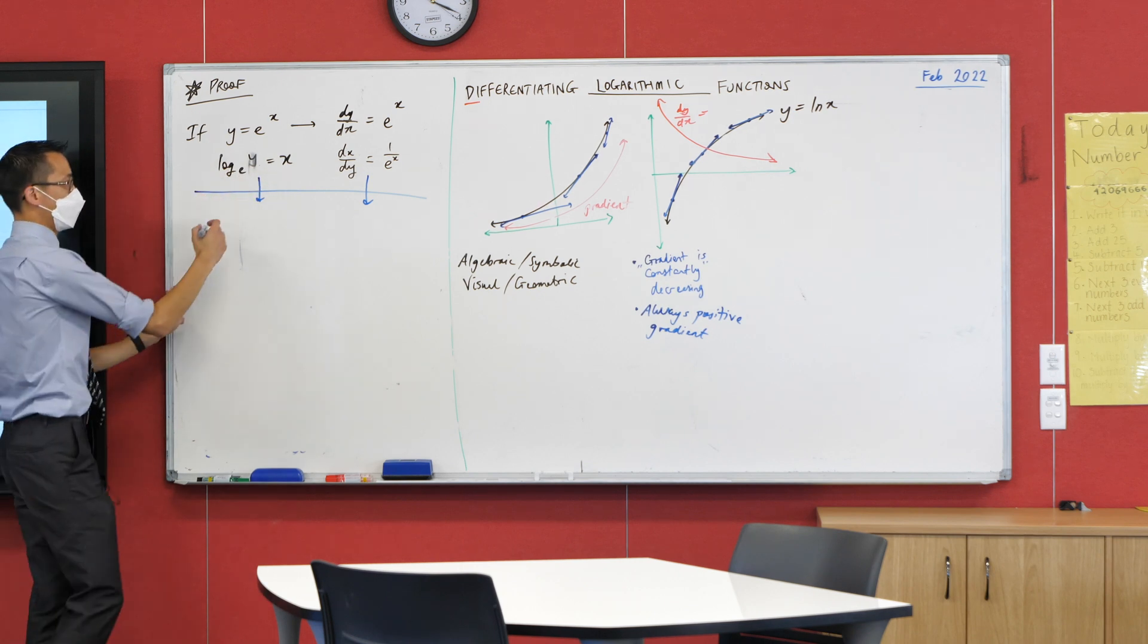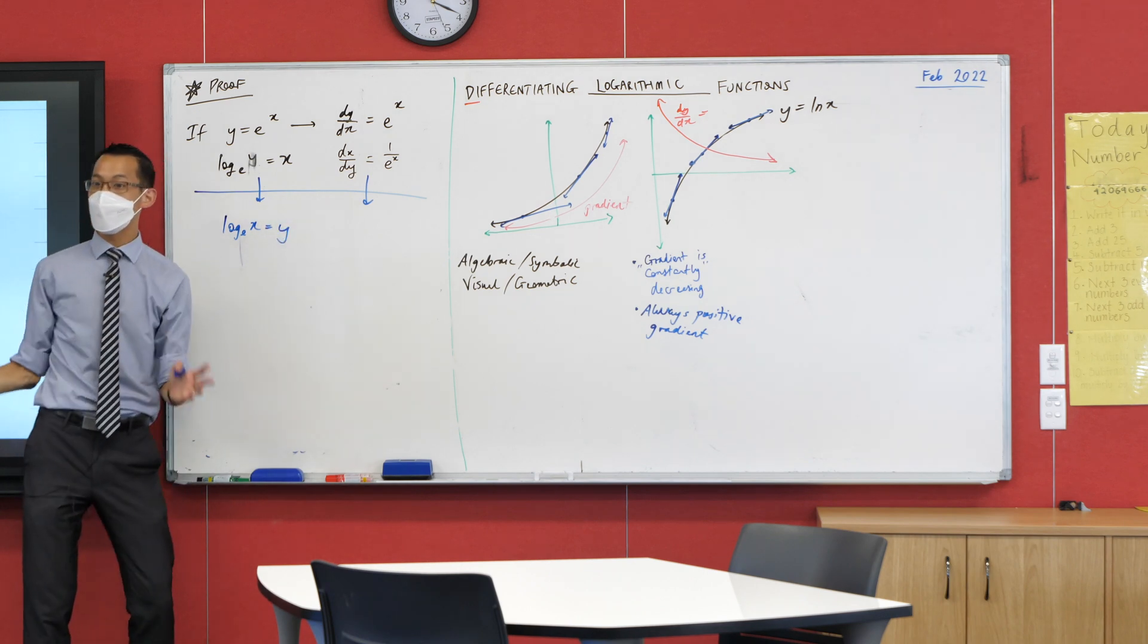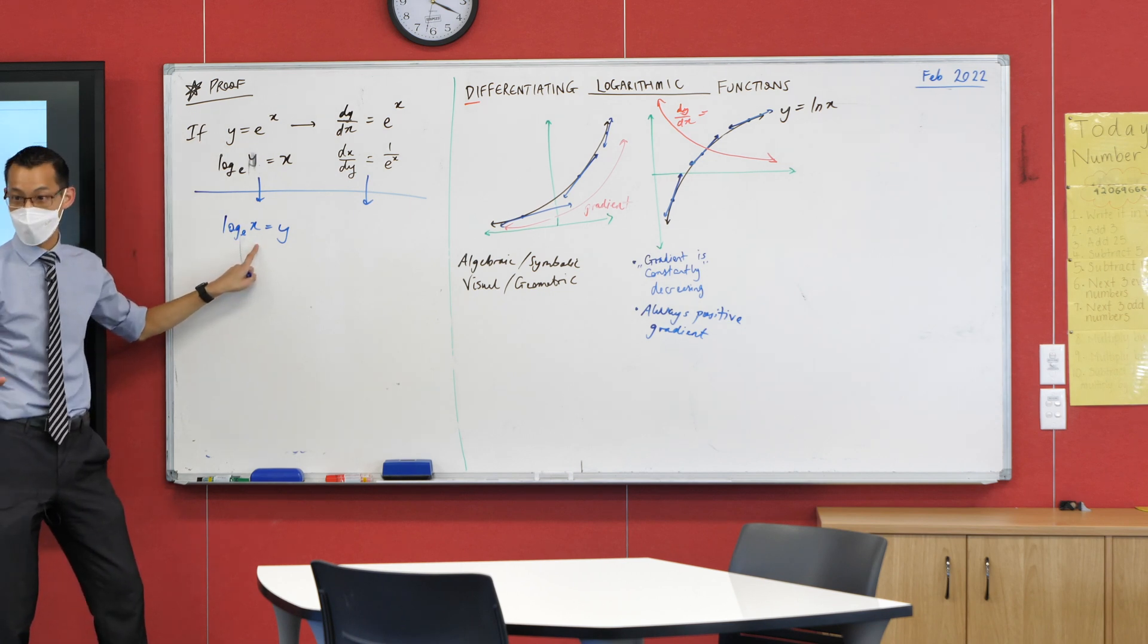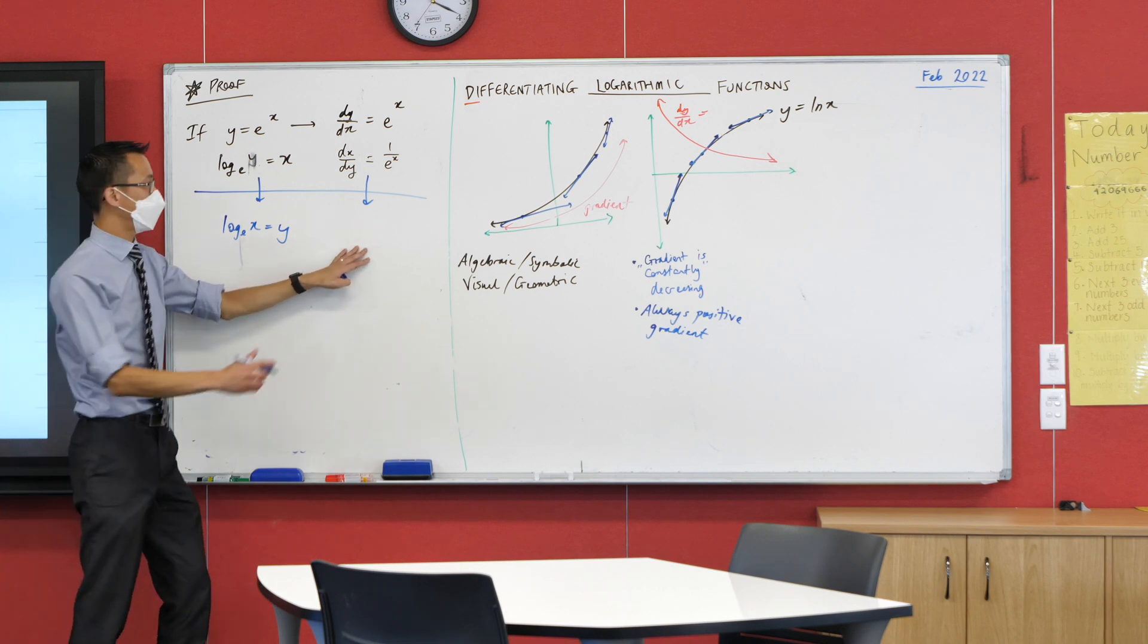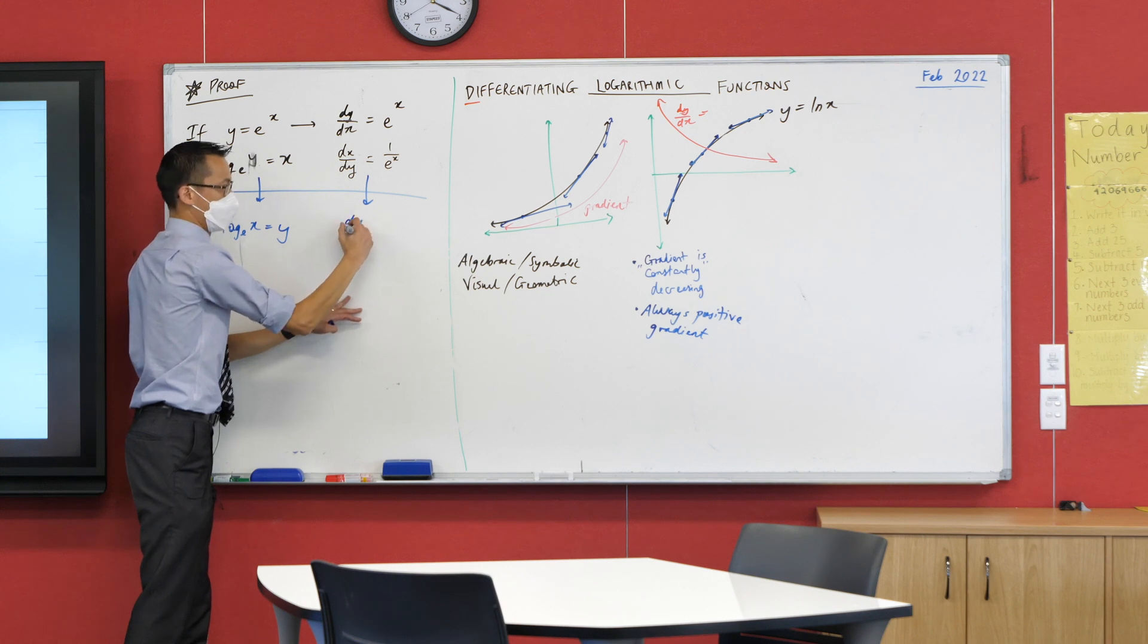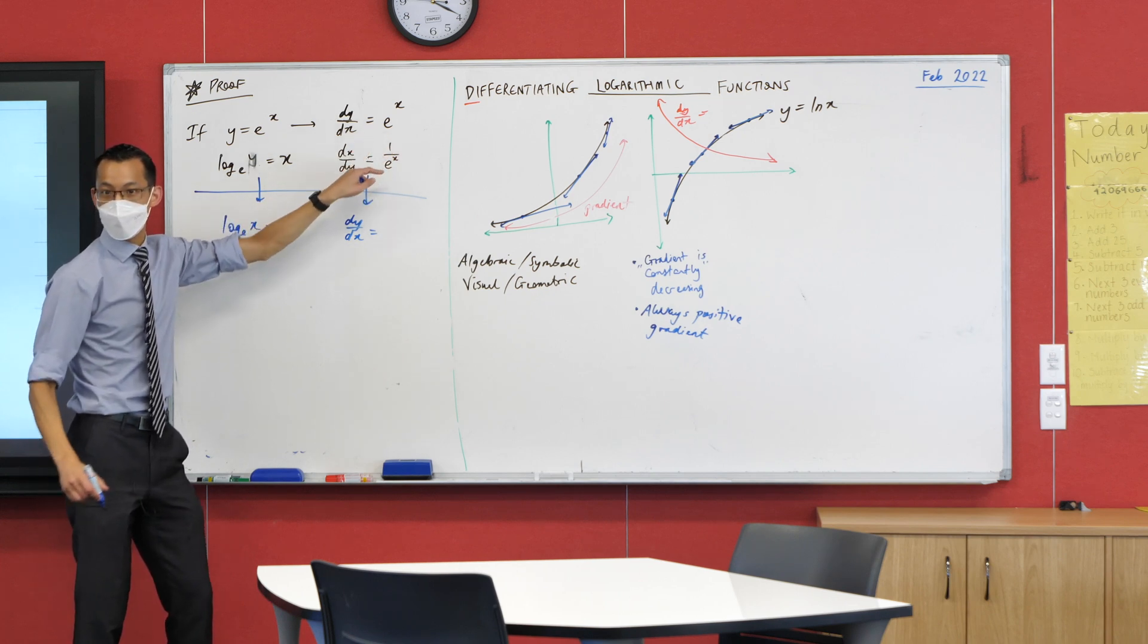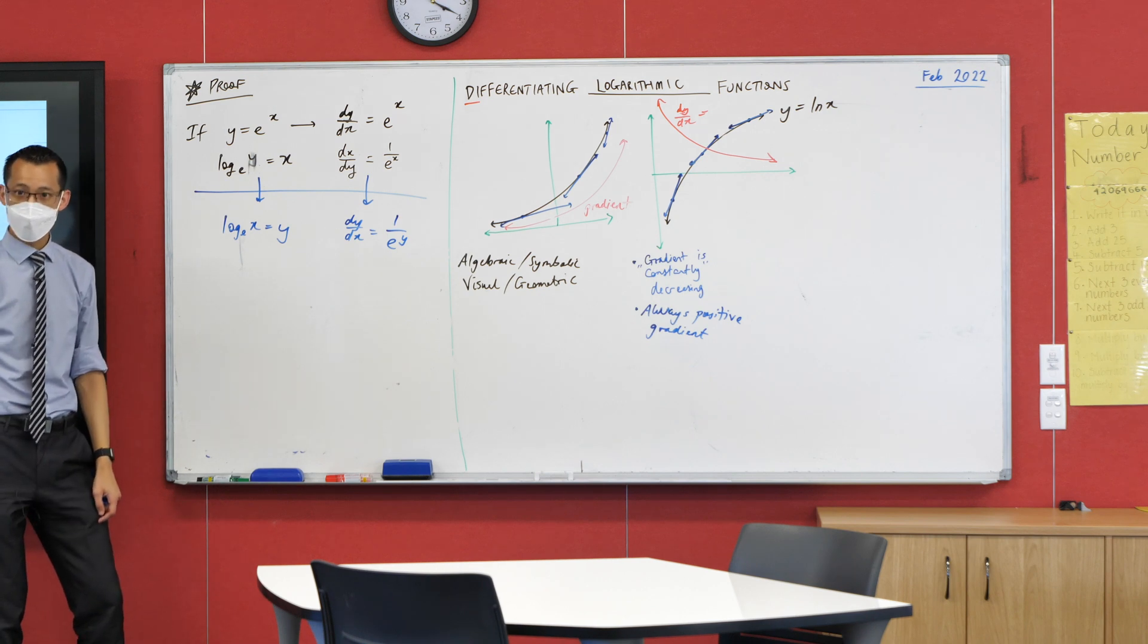Switching my X and Y's, I'll get log base E of X equals Y. So, this is a whole new equation. These two equations are the same one, dressed up differently. But this one, I'm doing something new. I'm going to keep on swapping X's and Y's. What do I get over here? DX on DY becomes DY on DX. Just done a switch, right? And then, lastly, 1 over, not E to the X, 1 over E to Y. Following so far?